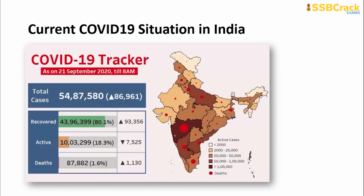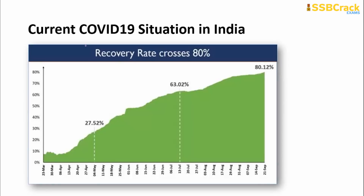Regarding the current COVID-19 situation in India as of 21st September 2020: total cases have reached 84 lakh 87,580; recovered cases are 43 lakh 96,399; active cases are 10 lakh 3,299; and deaths have reached 87,882. India's recovery rate has crossed 80.12 percent, and India has achieved the top position globally with approximately 43 lakh recoveries, representing 19 percent of global total recoveries.